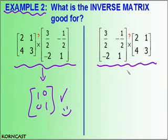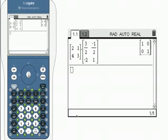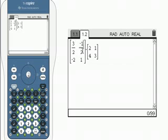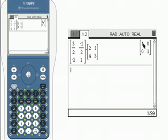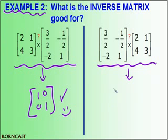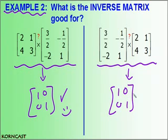Let's see if it works the other way: take our inverse matrix and multiply it by our matrix and see what we get. I typed in my inverse matrix, multiplied it by my original matrix, and when I hit enter I should get the identity matrix. And indeed, I get the 1, 0, 0, 1 matrix. So it did what it was supposed to. I take my matrix, multiply it by the inverse, and I do get the identity matrix.